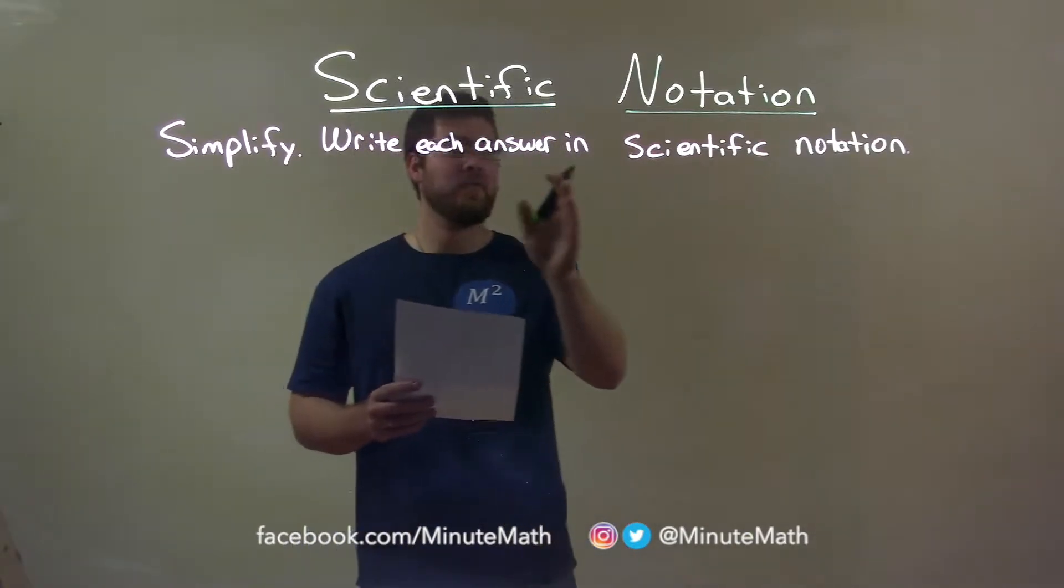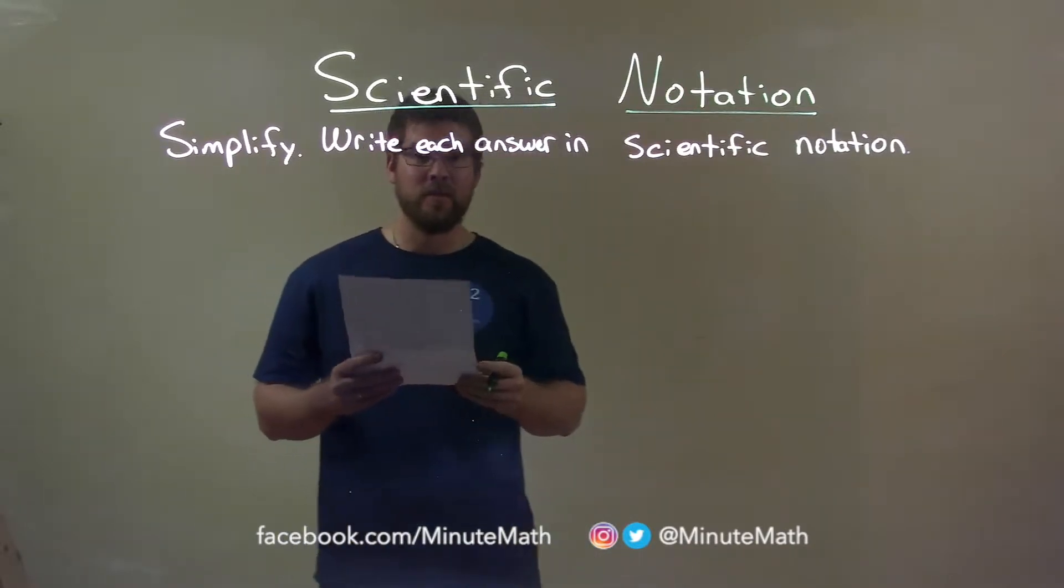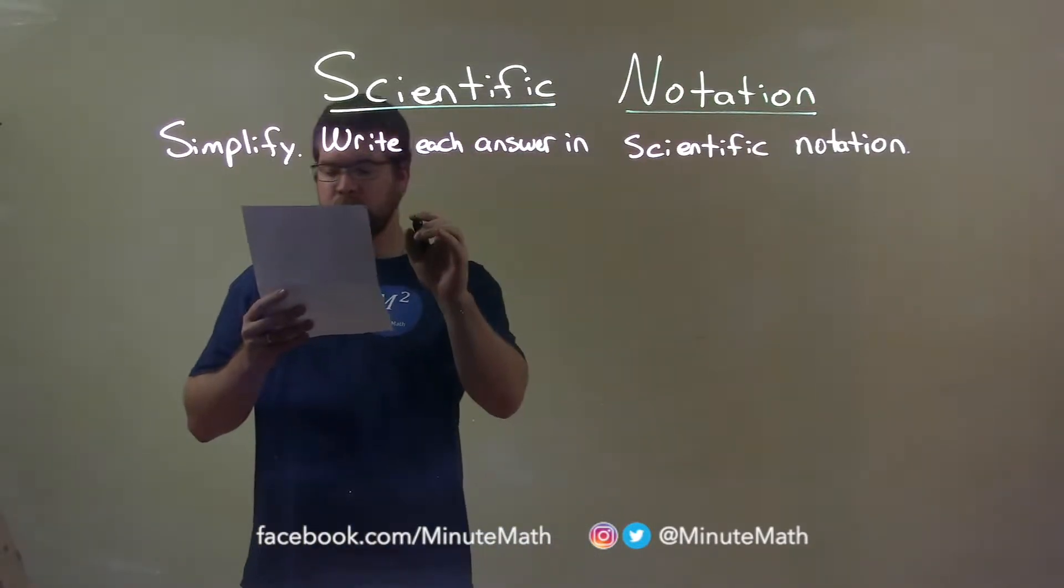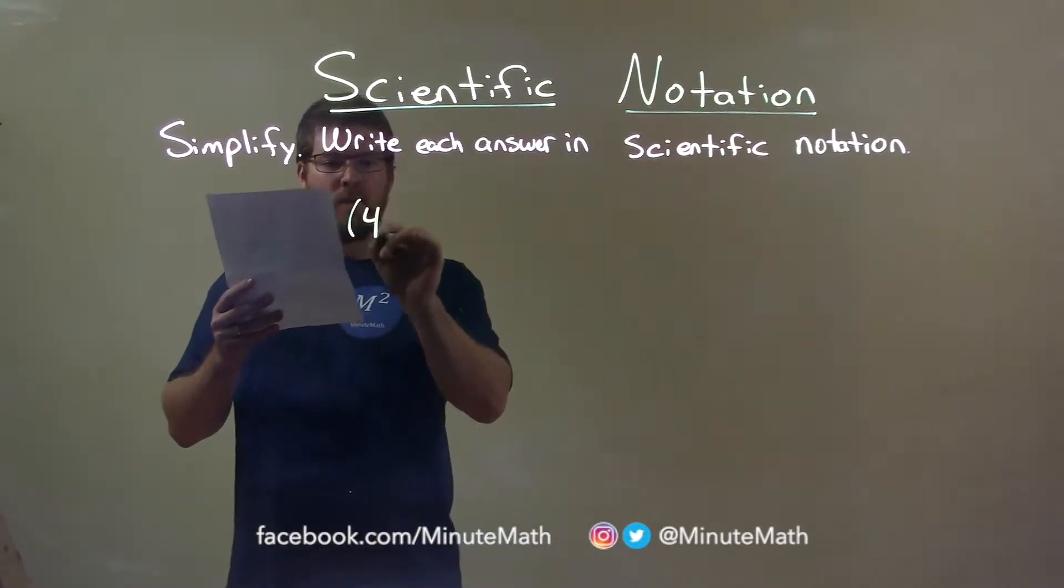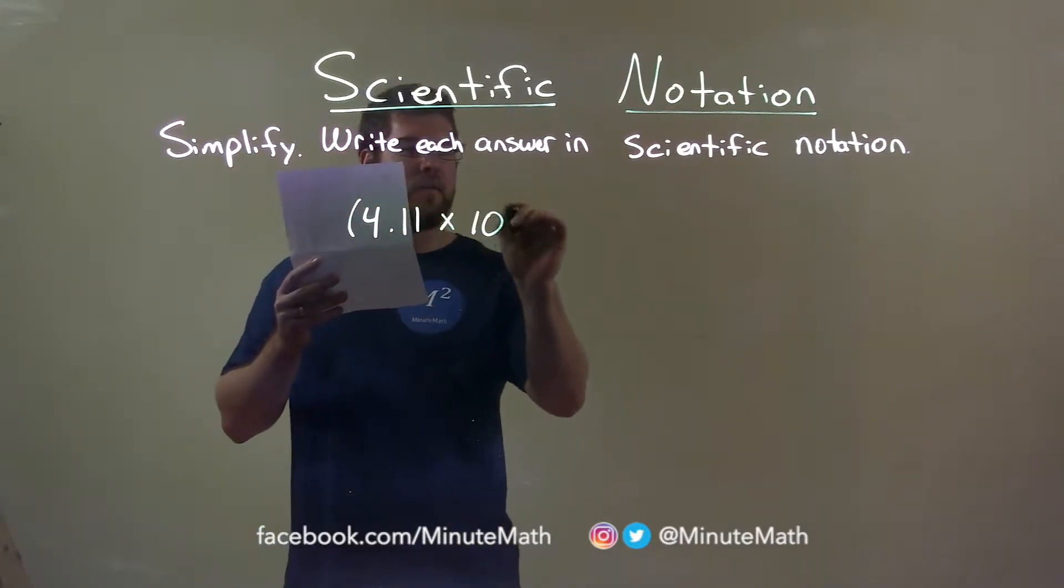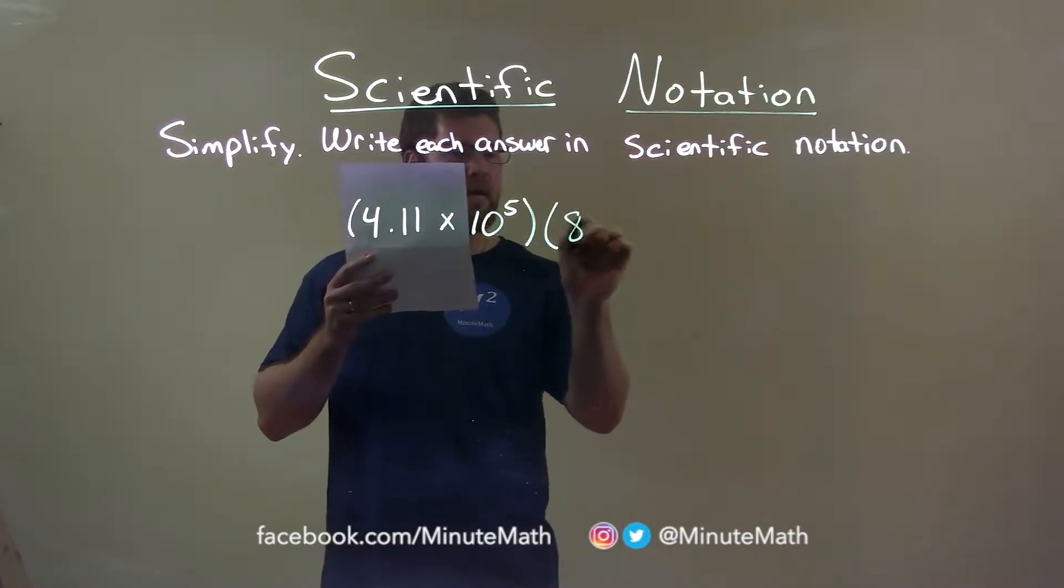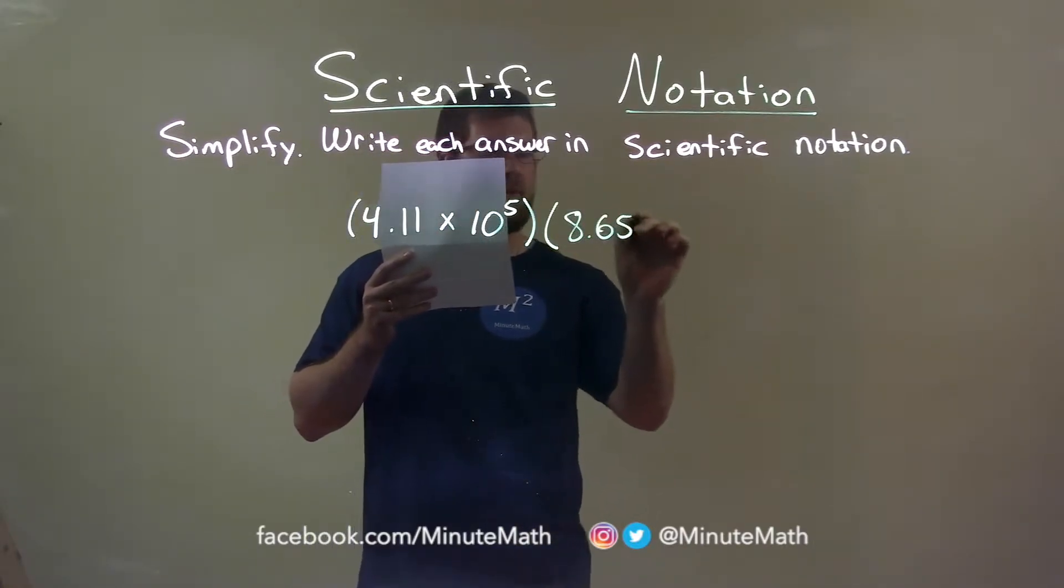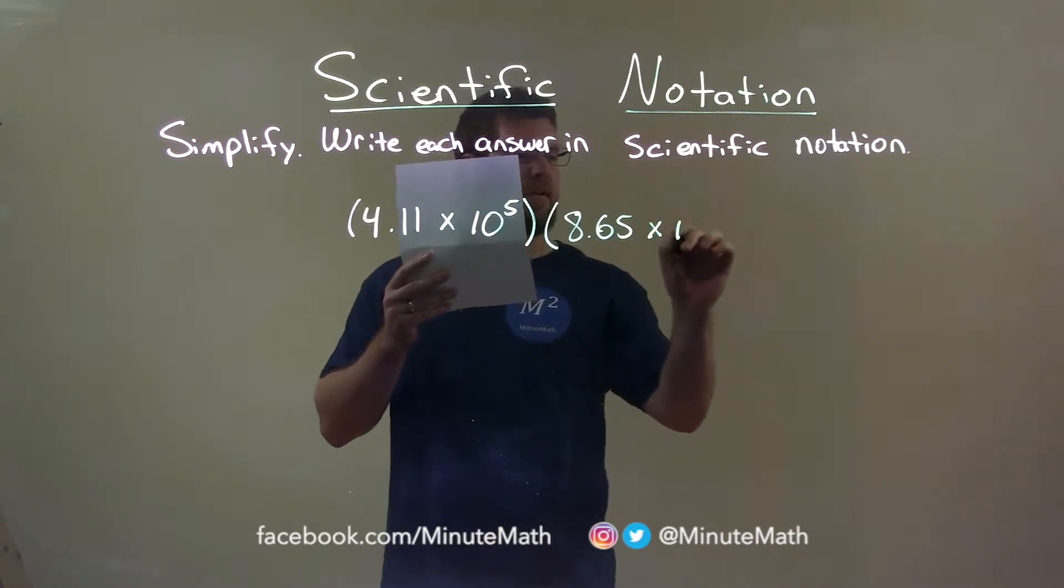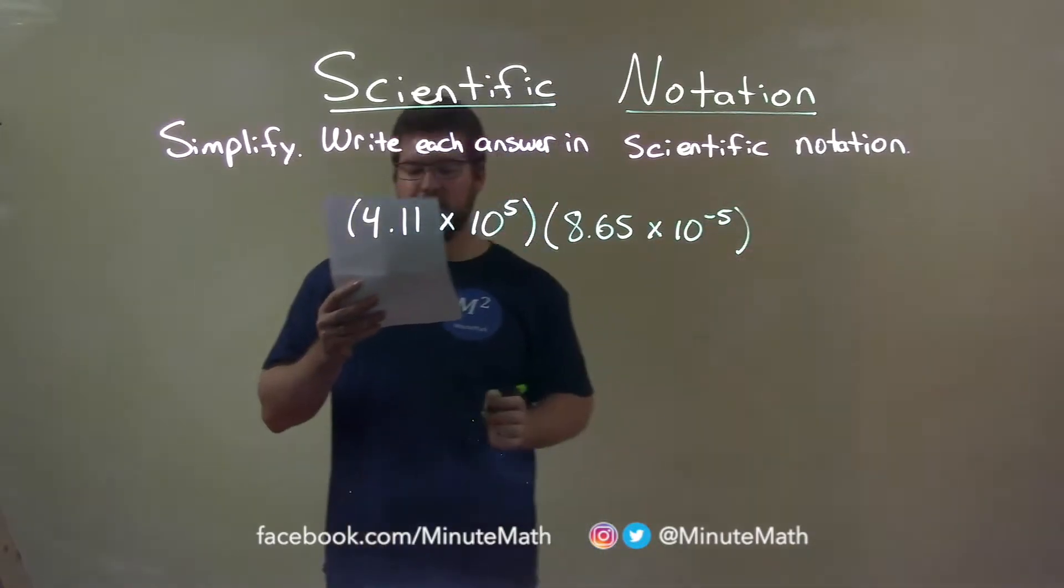We're going to simplify and write each answer in scientific notation. If I was given this problem: 4.11 times 10 to the 5th power, multiply that by 8.65 times 10 to the negative 5th power.